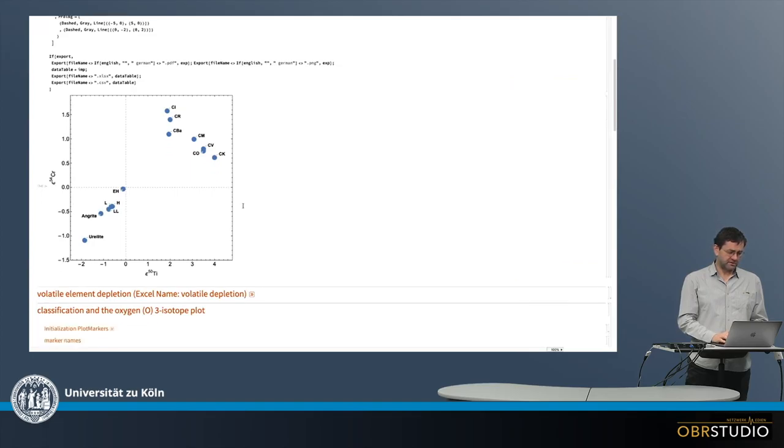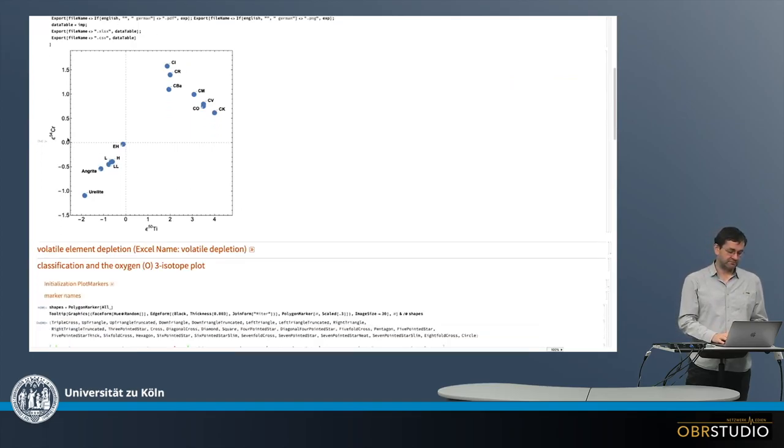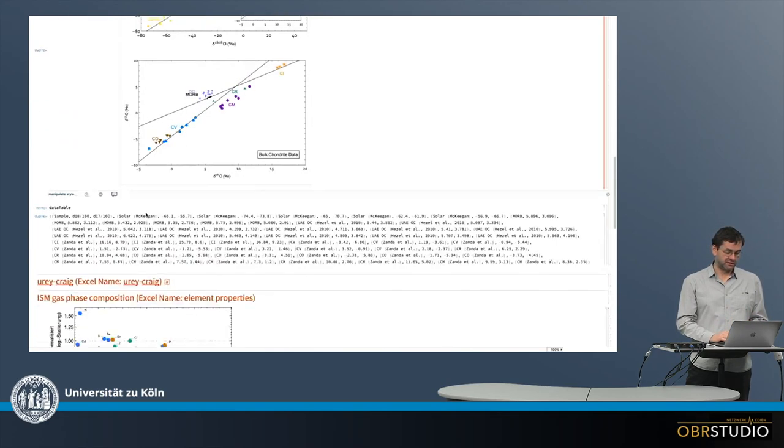And of course I can also plot, for example, isotope data against each other, like chromium and titanium. So these are two very different types of elements and isotopes, no problem. I can plot them against each other.